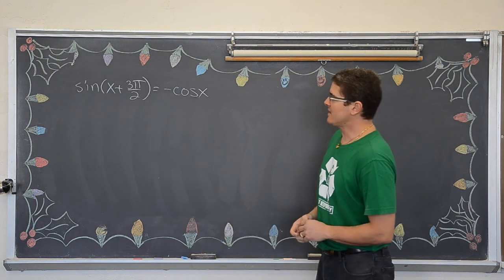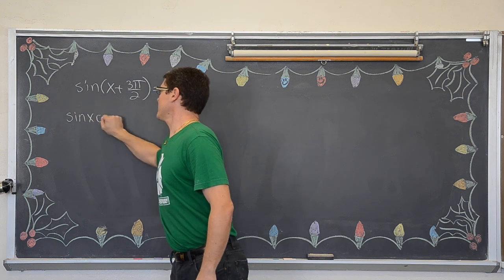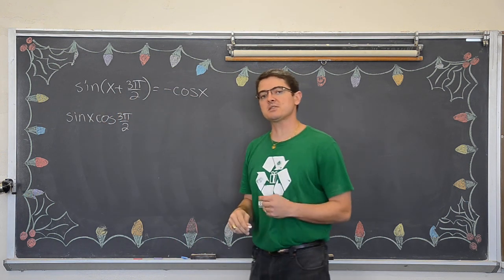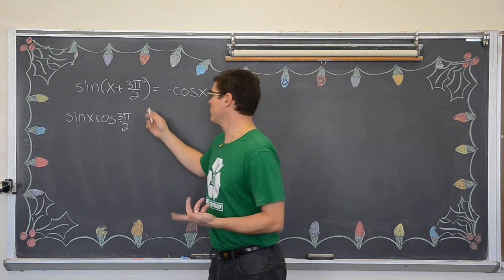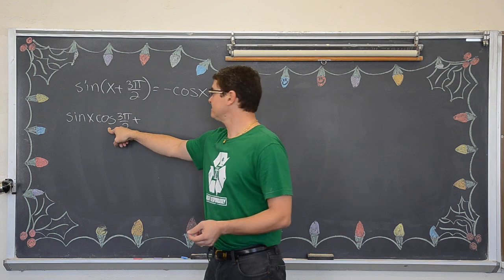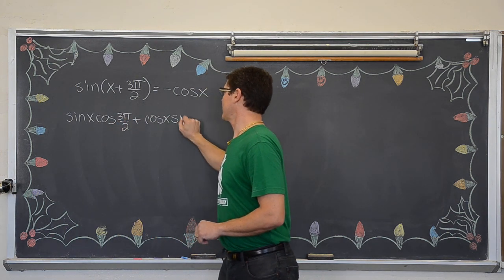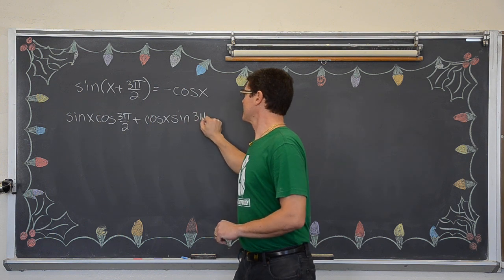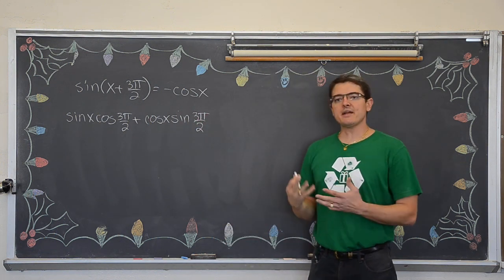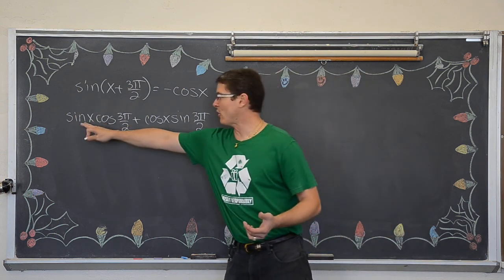The sine of two angles added together is sine of the first times cosine of the second, plus cosine of the first times sine of the second. So we apply that sum identity and start looking at the unit circle for what we have up here.